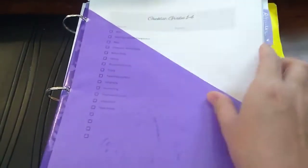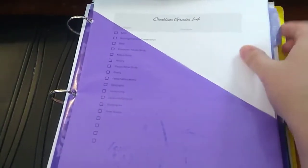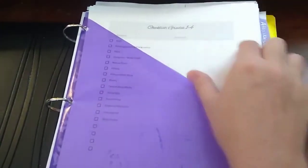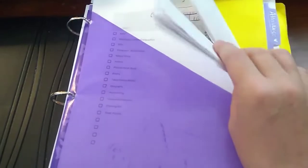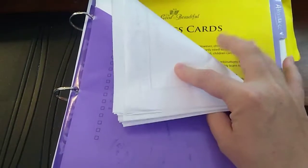In this front pocket is my attendance tab, so I keep extra record sheets, checklists, schedules, and also our extra phonics cards up here.